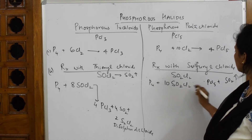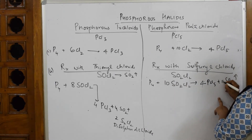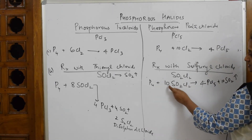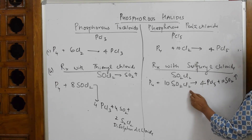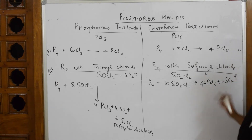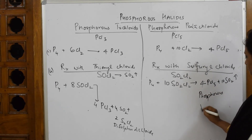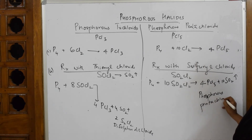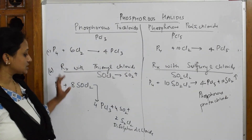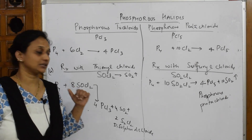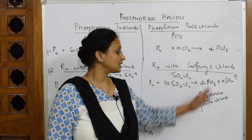Let us balance the sulfuryl chloride reaction: P4 with 10 moles of SO2Cl2. Phosphorus is 4, so make 4 PCl5. Sulfur: 10 on the left, so 10 SO2 on the right. Oxygens: 10×2 = 20 on each side. Chlorines: 10×2 = 20; 4×5 = 20 — balanced. So remember: with 8 moles of thionyl chloride you get S2Cl2 and PCl3; with 10 moles of sulfuryl chloride (SO2Cl2) you get PCl5 and SO2.